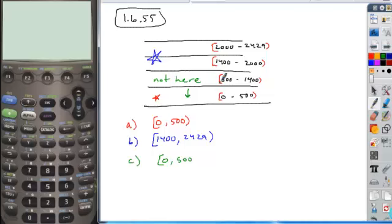500 is part of this level. So is that going to be included in the set that's not in that level? No. So it's going to be a parenthesis at 500.